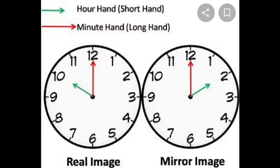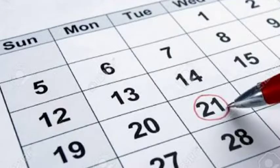The standard unit of measuring time is the second. Other units of time are minute and hour. Time can also be measured in larger periods such as days, months, and years.